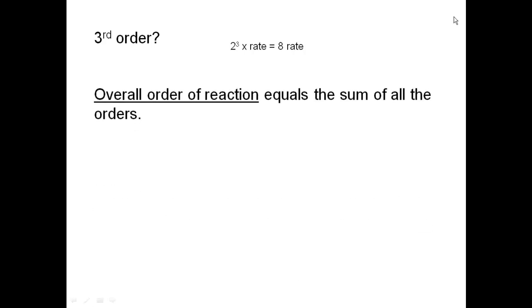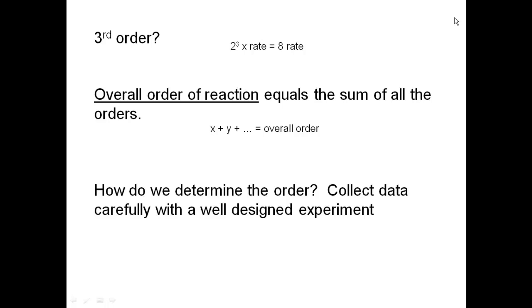We also calculate the overall order of the reaction, which equals the sum of all the individual orders — so you add up all the orders. In this case it would be x + y + whatever, giving the overall order. To determine the order experimentally, you collect data carefully with a well-designed experiment. You vary the concentration of reactants in such a manner that allows you to determine the order by holding some species constant while changing others — any change in rate is then due to the species being changed.